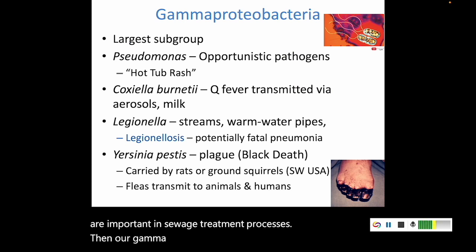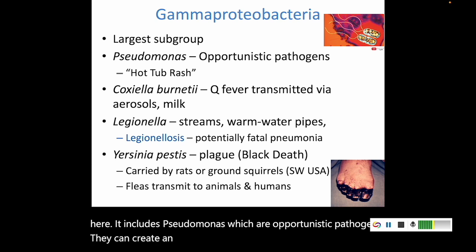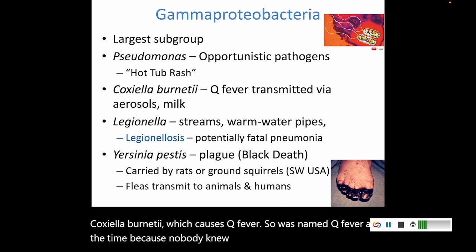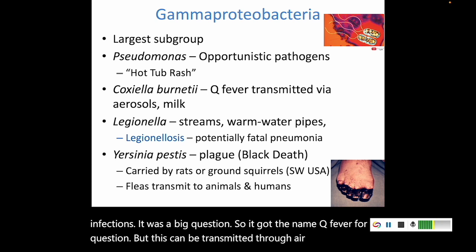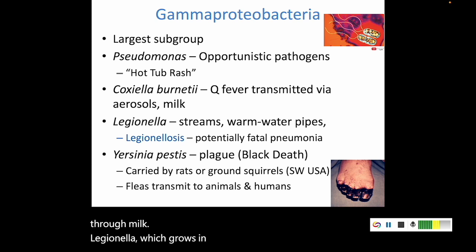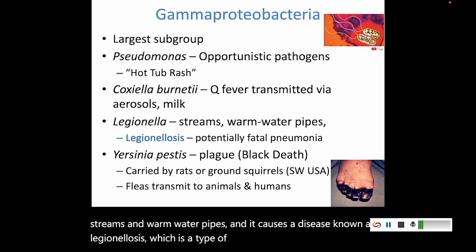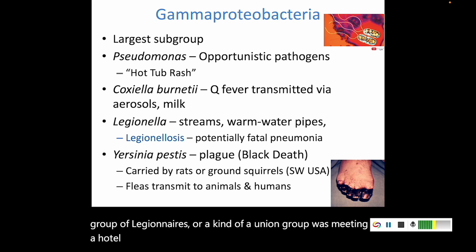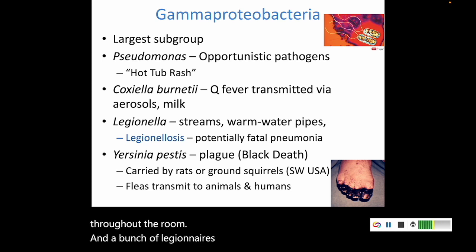Our gamma proteobacteria are a really large group. It includes Pseudomonas, which are opportunistic pathogens that can create an infection known as hot tub rash. Coxiella burnetii causes Q fever — it was named Q fever because nobody knew what was causing these infections; it was a big question. It can be transmitted through aerosols and through milk. Legionella grows in warm water areas such as streams and warm water pipes, and causes Legionellosis, a type of pneumonia. It was named after a group of legionnaires meeting in a hotel whose air conditioning pipes harbored the bacteria, which was then aerosolized throughout the room, making many people very sick.